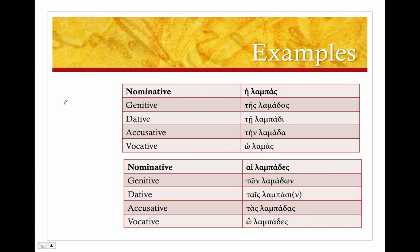So let's look at some examples. We get lampas. I apologize for the misspellings here. It means lamp. This is feminine. The stem should be lampados. So, ἡ λαμπάς, τῆς λαμπάδος - there's our stem, lampad - λαμπάδι, λαμπάδα, ὦ λαμπάς.